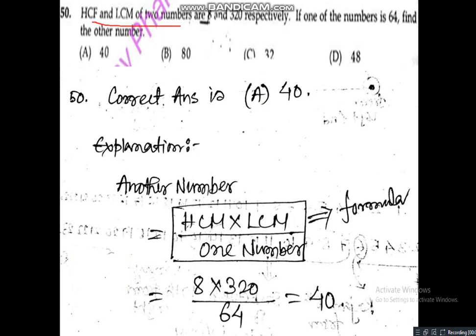Question 50 is a math question. The HCF and LCM of two numbers are 8 and 320 respectively. If one of the numbers is 64, find the other number. Option A: 40, Option B: 80, Option C: 32, Option D: 48. Correct answer is Option A — 40.